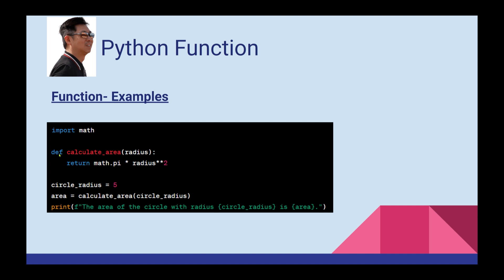The function uses the DEF keyword. The function name is circle_area and the parameter is radius. Inside the function, we use math.pi — which is approximately 3.14 — and return pi multiplied by radius to the power of 2. So this calculates pi r squared, the area of a circle.